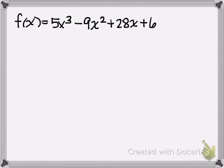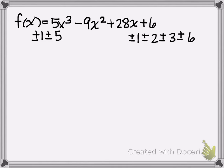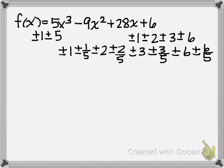Here's a polynomial function that we would like to solve — find the roots — and we're going to use the rational zero test. I'm looking at the factors of the leading coefficient, the factors of the constant, and then all the variations of factors-over-factors. So we get plus or minus 1, plus or minus 1/5, plus or minus 2, and plus or minus 2/5. Those are all the possible rational roots.